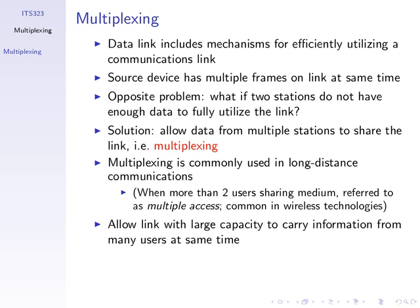If people pay for that link, they want to make sure it's used all the time. Multiplexing allows data from multiple stations to share the one link. We'll talk briefly about the two different approaches. Normally used over long-distance communications — a telecommunications company may have a link from here to Chiang Mai, and that's not just for one user, that's for all of their customers. So the traffic from all customers goes across that one link.